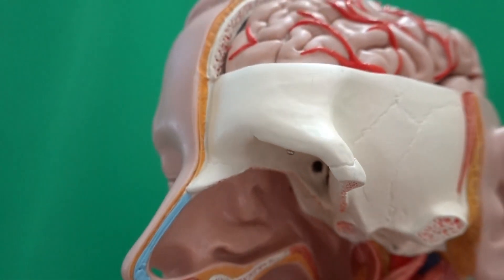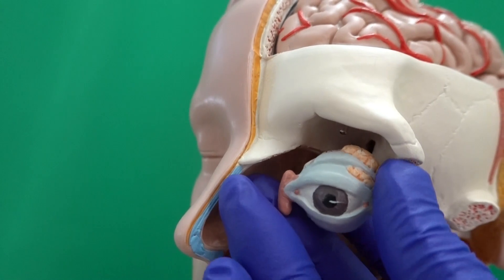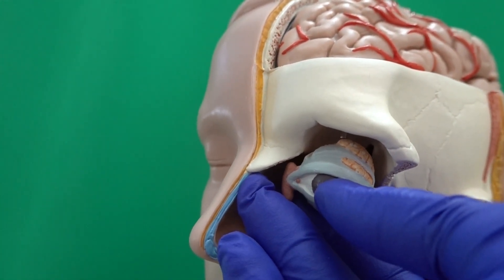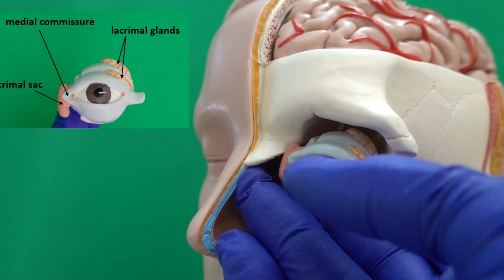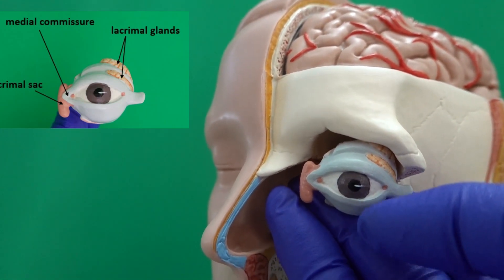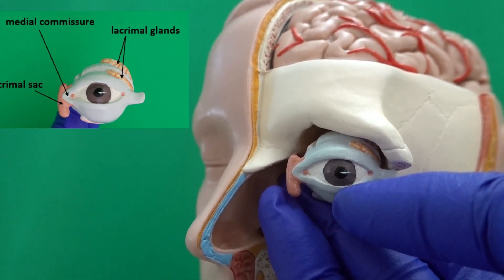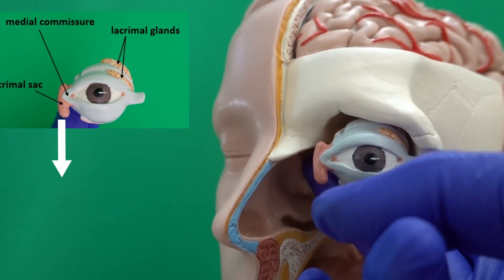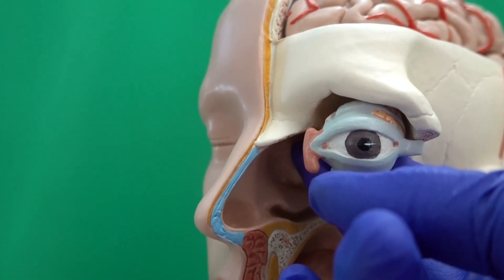To understand what is released into the inferior nasal meatus, we take a look at one of the eyeballs. Lateral to and above the eyeball, we have some glands that sit inside the orbit — we name them lacrimal glands. They secrete a fluid named lacrimal fluid or tear. Tear washes the surface of the eye and goes toward the medial commissure, where there is an oval-shaped pink structure called the lacrimal sac. Tear gets inside the lacrimal sac, and from there, a long pathway named the nasolacrimal duct goes down and eventually opens inside the inferior nasal meatus.